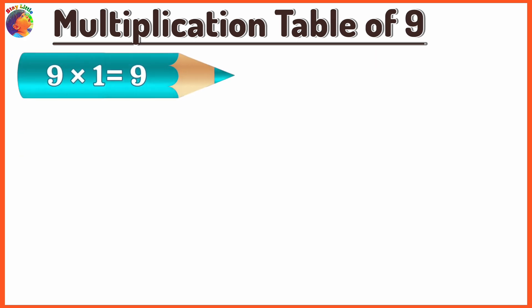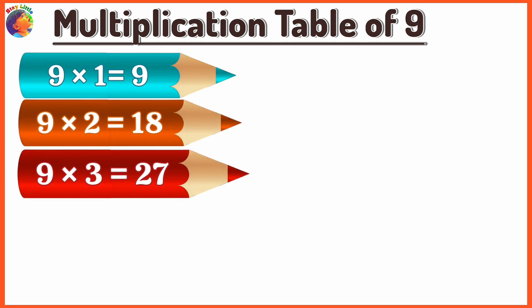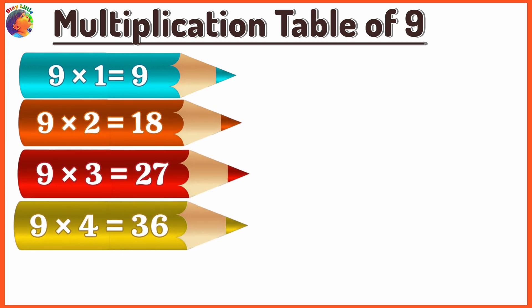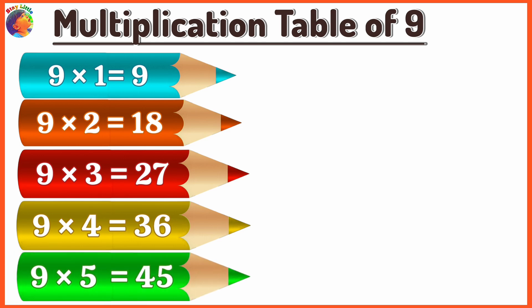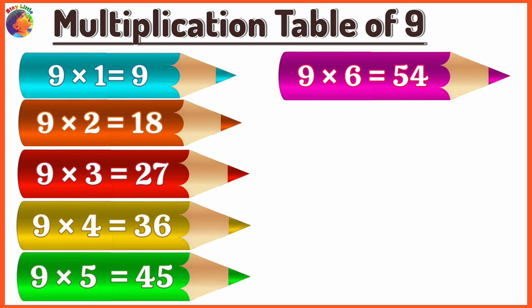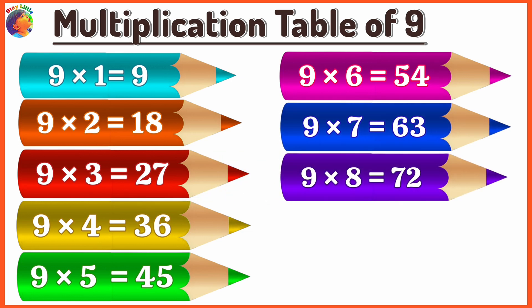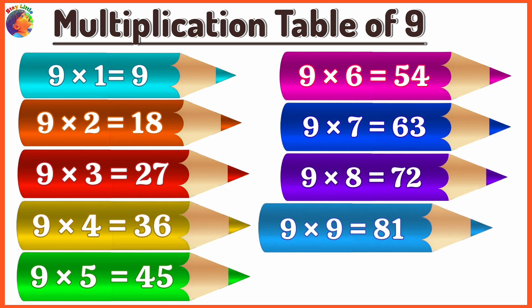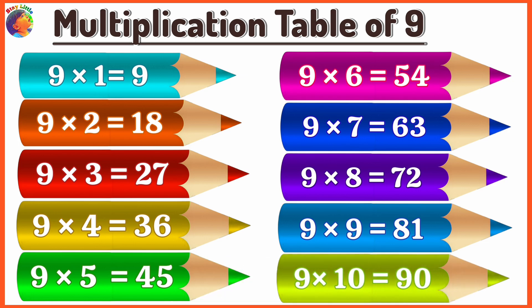9 x 1 is 9, 9 x 2 is 18, 9 x 3 is 27, 9 x 4 is 36, 9 x 5 is 45, 9 x 6 is 54, 9 x 7 is 63, 9 x 8 is 72, 9 x 9 is 81, 9 x 10 is 90.